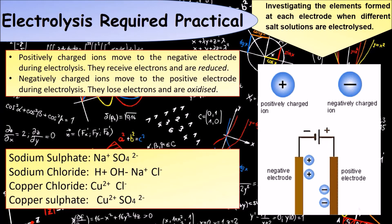In this practical you will be given four different solutions to carry out electrolysis with: sodium sulfate, sodium chloride, copper chloride, and copper sulfate. The image shown here indicates what ions will form and what ions you need to be thinking about during these four lots of electrolysis. At this point you might want to pause the video and note these down.